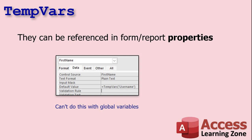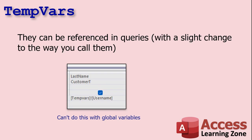Here's something else you can't do with global variables: you can use TempVars in form and report properties, like the default value property. You could say = TempVars!Username, so you could set up a bunch of defaults throughout your database. Instead of having to look those up from a table, you put them in your startup code somewhere, set TempVars, and then reference them as default values or other properties like the caption property.